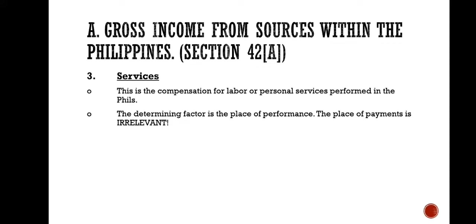Number 3 is services — compensation for labor or personal services performed in the Philippines. The determining factor is the place of performance; the place of payment is irrelevant. For example, if a service has been rendered in the Philippines but payment was made in Singapore, such will be considered as income derived from within the Philippines because the determining factor is the place of performance, not payment.